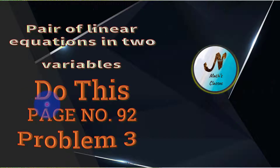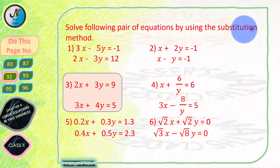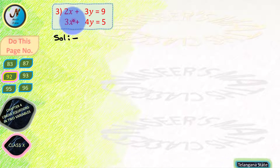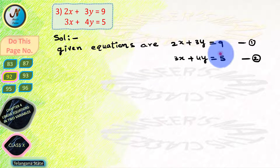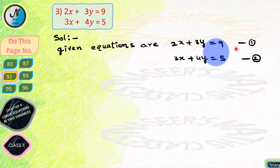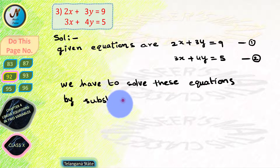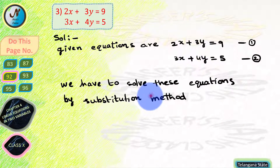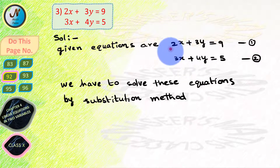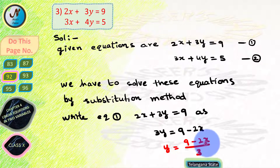Now we solve page number 92, problem 3. Two linear equations are given and we have to solve them by substitution method. The equations are: 2x plus 3y equals 9 — let this be equation 1 — and 3x plus 4y equals 5 — let this be equation 2. To solve by substitution method, we write equation 1 in terms of y: y equals (9 minus 2x) by 3.